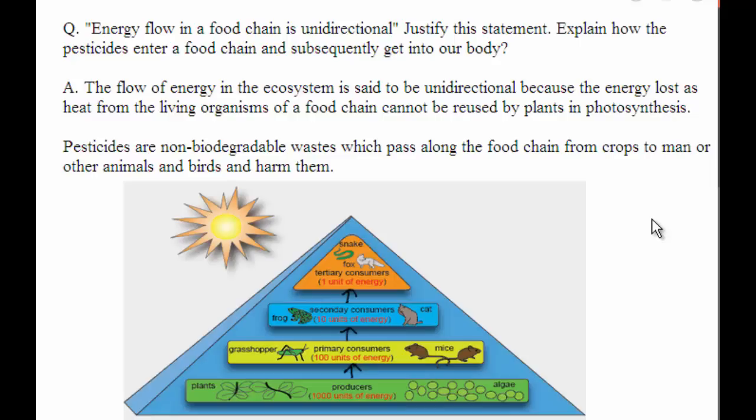The question is: energy flow in a food chain is unidirectional. Justify this statement. Explain how pesticides enter a food chain and subsequently get into our body. A food chain is a chain that shows how organisms are related with each other by the food they eat.